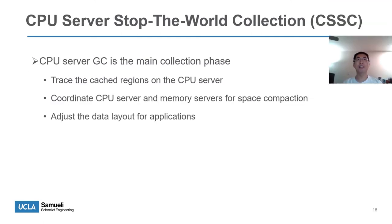As mentioned, a CPU server GC is necessary — it is the main collection phase. First, the CPU server is responsible for tracing the regions cached on the CPU server. Second, the CPU server GC utilizes the stop-the-world window to reclaim data space on both the CPU server and the memory servers. The CPU server GC is also responsible for adjusting the data layout for live objects.